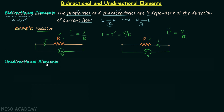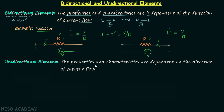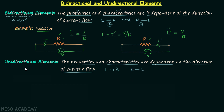A unidirectional element is an element in which the properties and characteristics are dependent on the direction of current flow. When current flows from left to right, the properties will be different compared to when the current flows from right to left. An example of a unidirectional element is a diode.